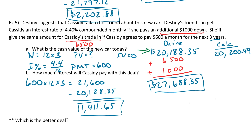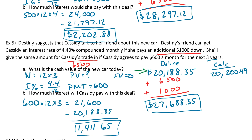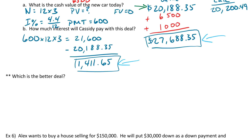Which is the better deal? Looking at both answers, not only is the cash value lower for example five, but she's also paying way less interest. So the better deal is example five. Keep in mind that doesn't mean there's never a reason to go with example four — if you can only afford $500 a month and not $600, then example four is the option you'd want. But if you're just looking for the better deal, example five is it.